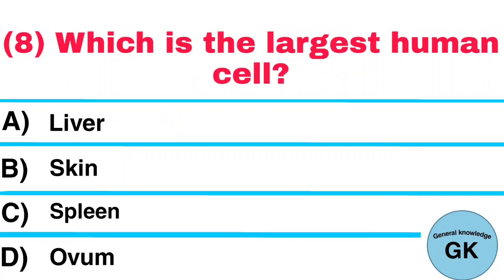Question number 8. Which is the largest human cell? A. Liver. B. Skin. C. Spleen. D. Ovum. Answer: Ovum.